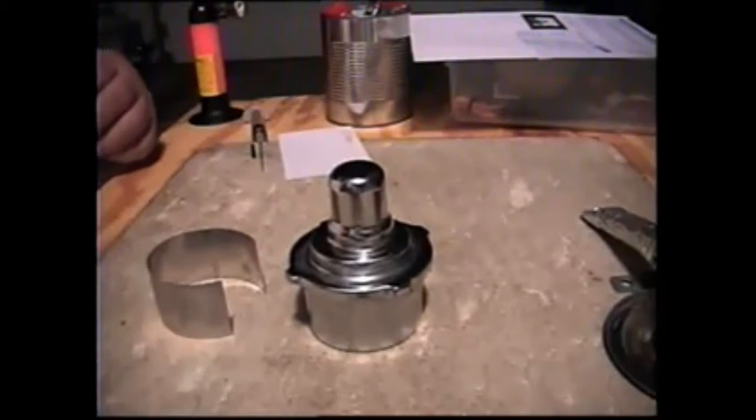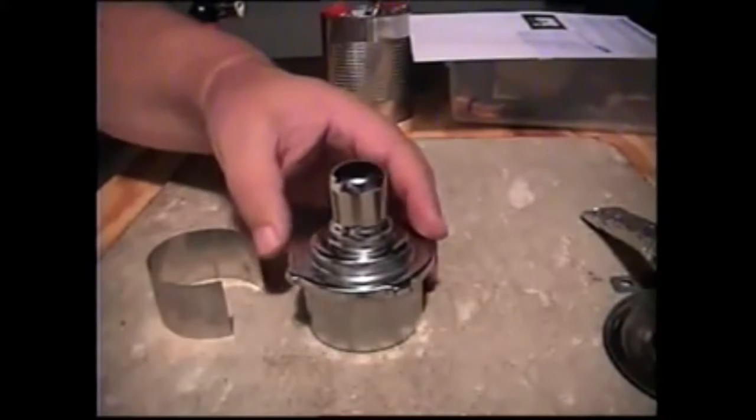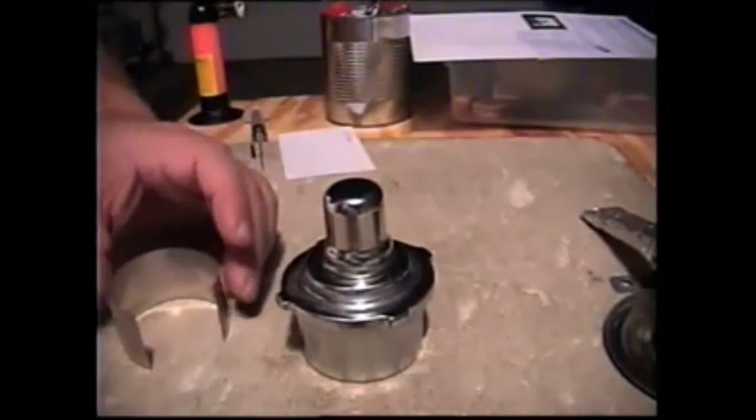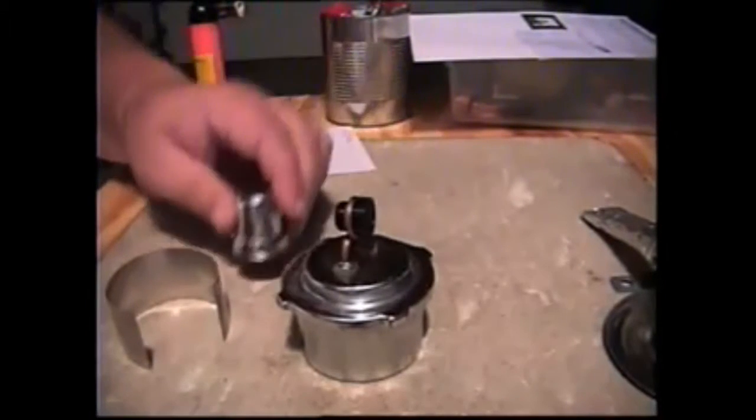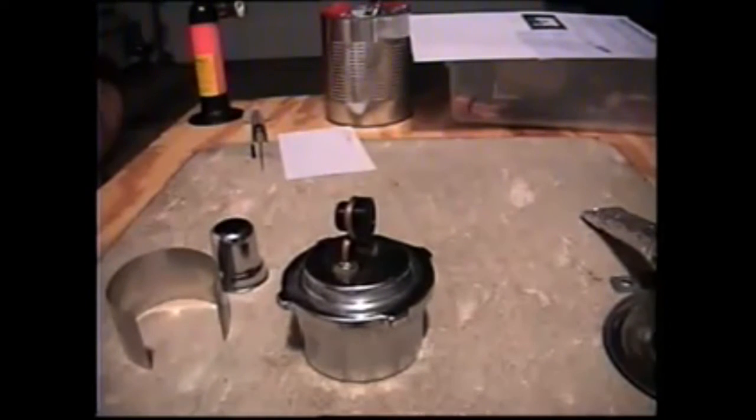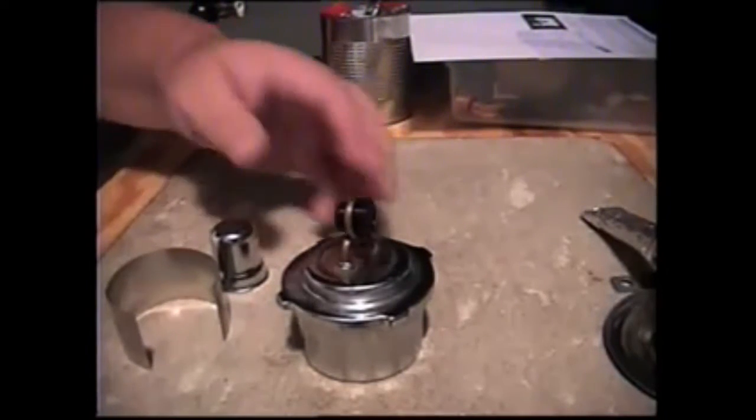It's called a Wickless Alcohol Burner. It's a coil type burner. Got it on eBay for, with shipping, it was less than $13.